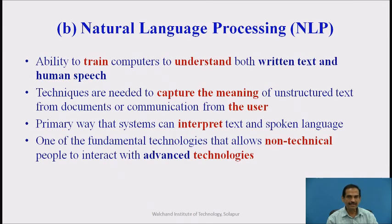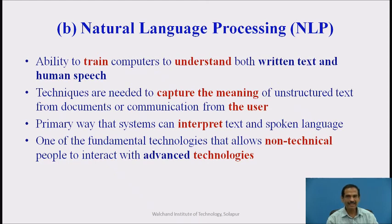Natural language processing (NLP) is the second subfield of AI — the ability to train computers to understand both written text and human speech. Techniques are needed for capturing the meaning (semantics) of unstructured text from documents or user communication. Use of various tools like tag tools and semantic tools is necessary. NLP is the primary way systems interpret text and spoken language, and is one of the fundamental technologies that allows non-technical people to interact with advanced technologies.